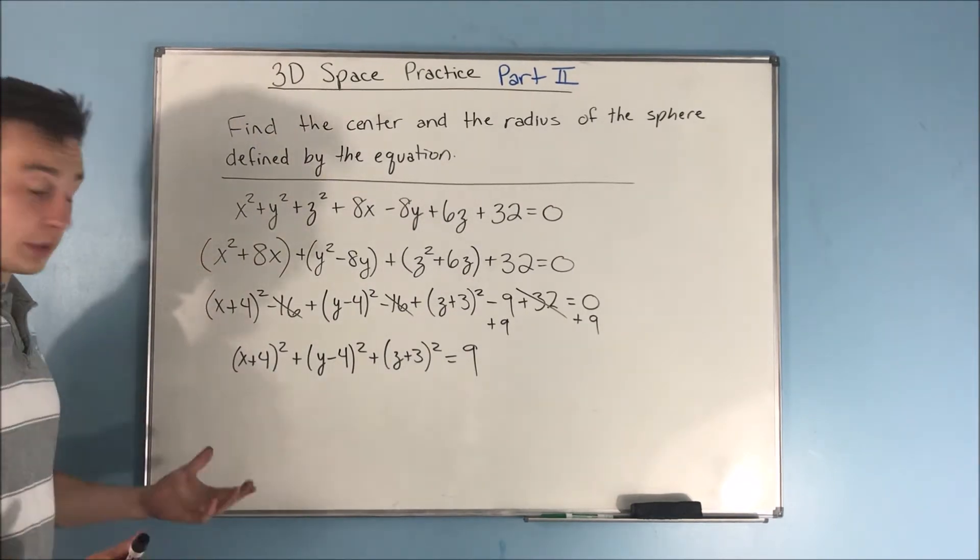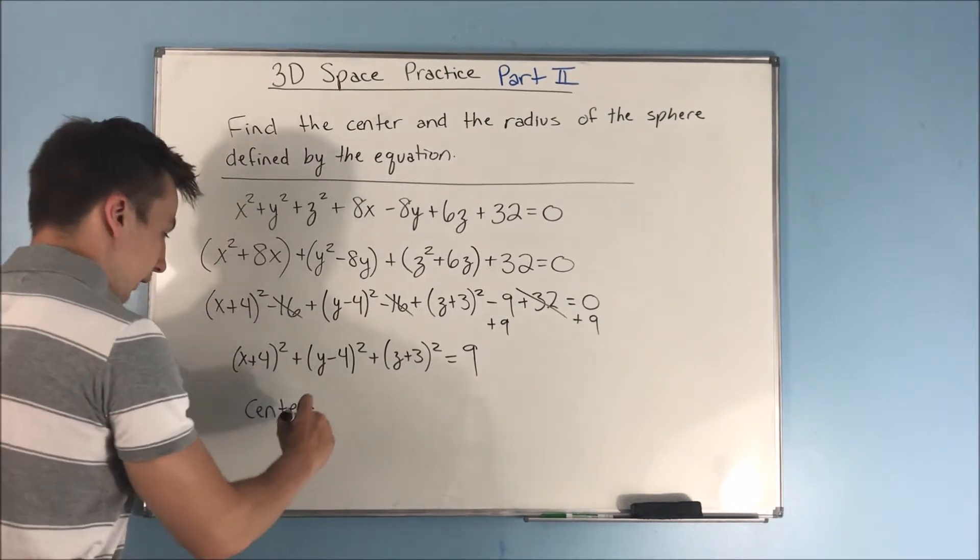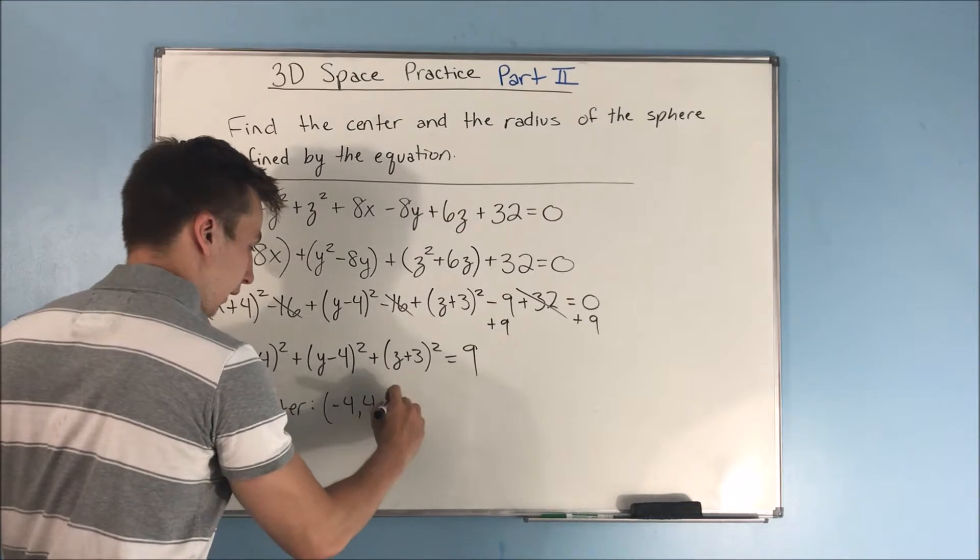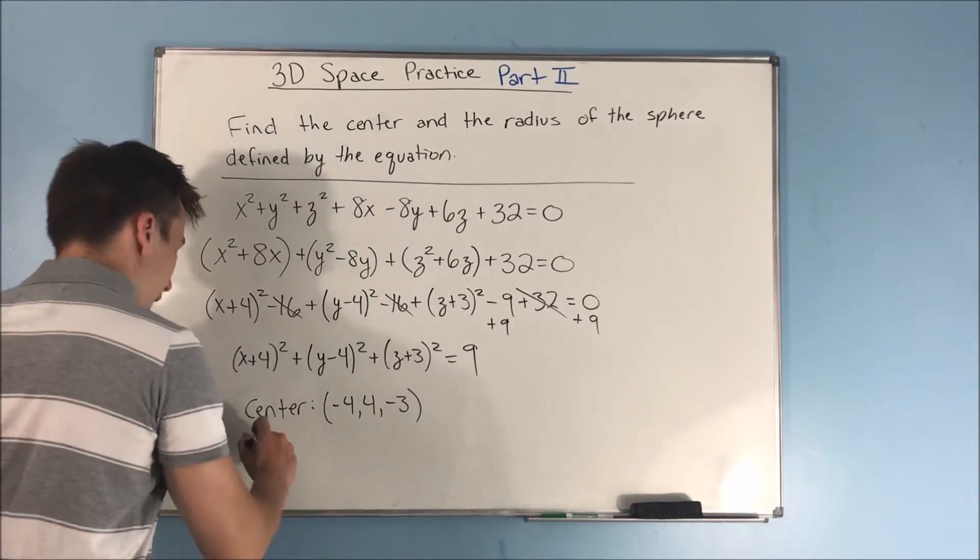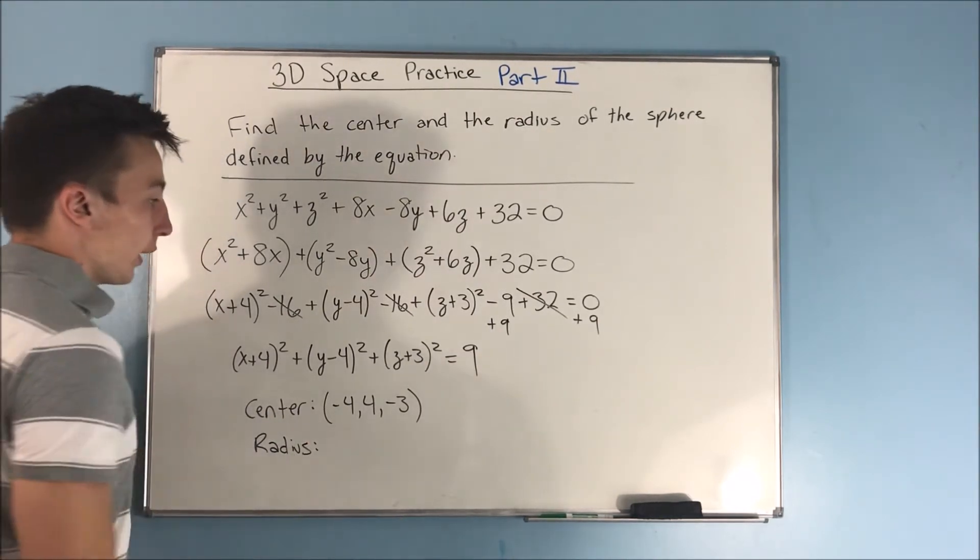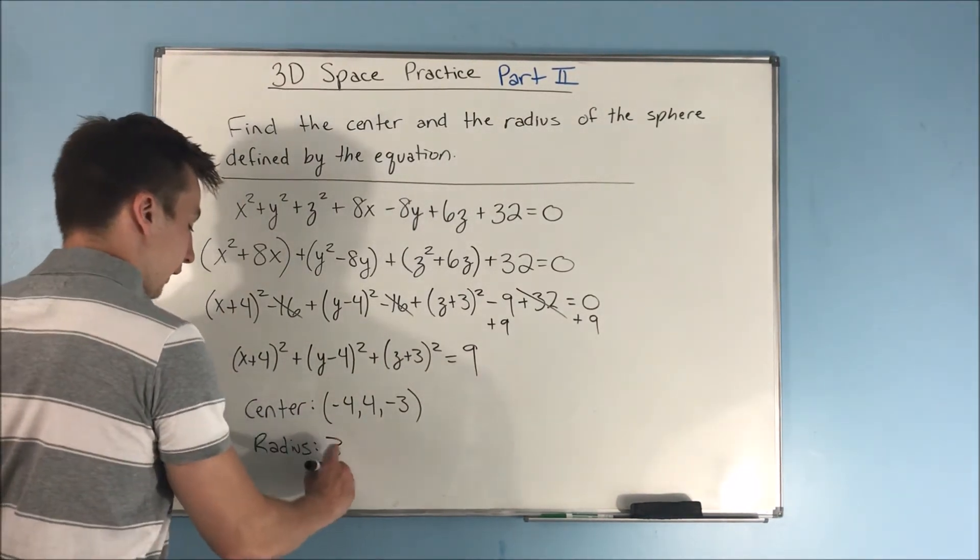So what's your center? Your center is going to be (-4, 4, -3). So just flip the signs of all these. And your radius, remember in our equation, this was r². So take the square root of that. Our radius is just going to be 3 here.